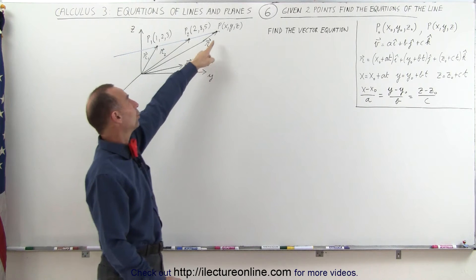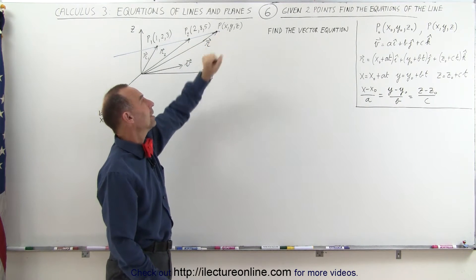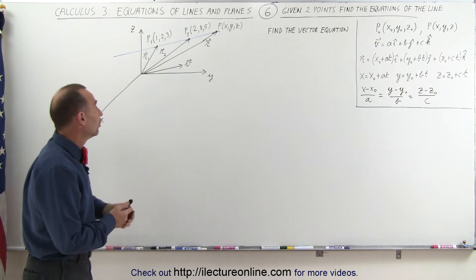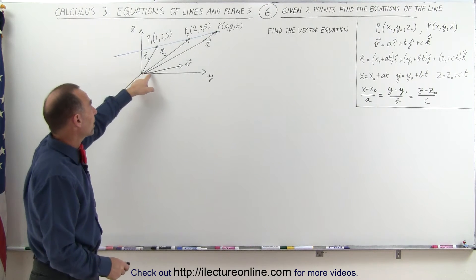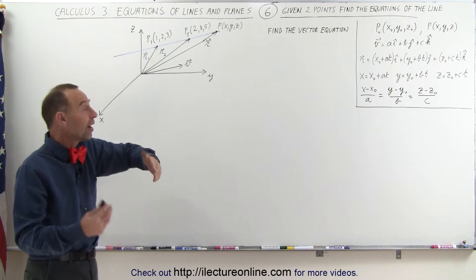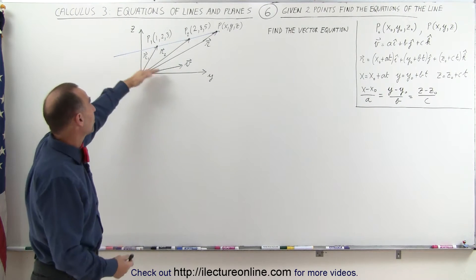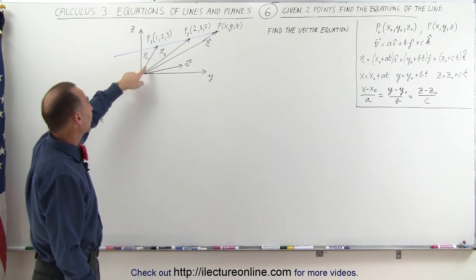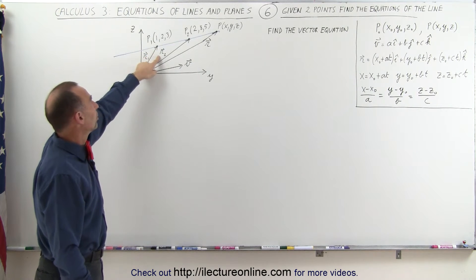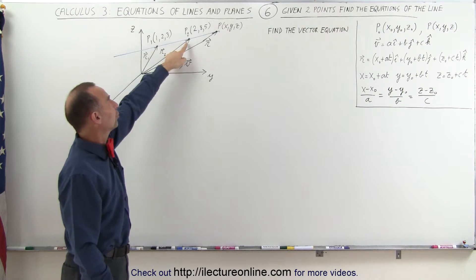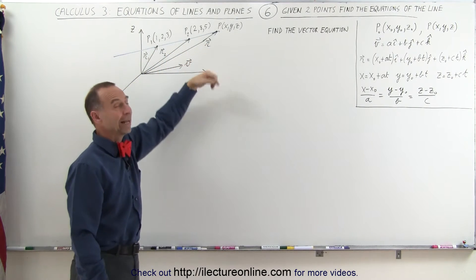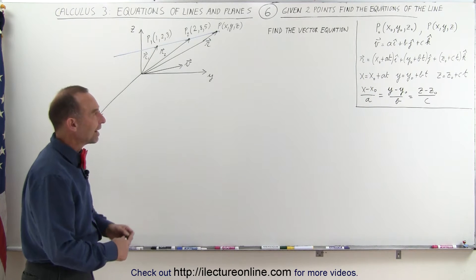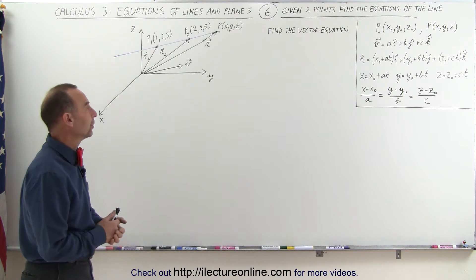We take any arbitrary point called P, which has coordinates x, y, z. Notice we have a parallel vector V, which is not yet defined, and which runs parallel to the line. We also have three vectors: the position vector to point 1, the position vector to point 2, and the position vector to any arbitrary point on the line. We want to find the vector equation.